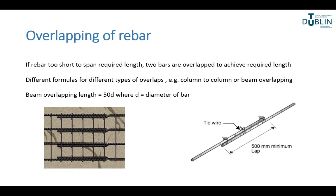Another topic is overlapping. If the rebar is too short or the length required is too great, we can actually overlap two bars. There's a specific way to do this. This would happen in columns and beams where there are quite long lengths — remember, our standard length is 12 metres. When doing bar bending schedules and calculating the length of bars, you'd have to take account of this overlap.